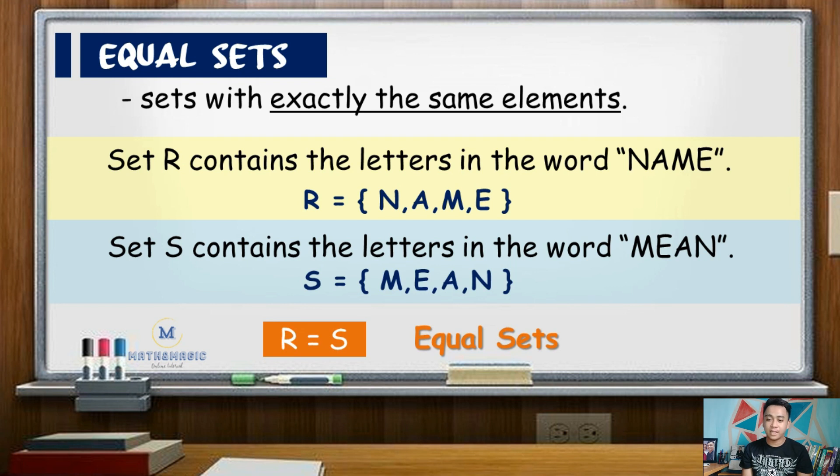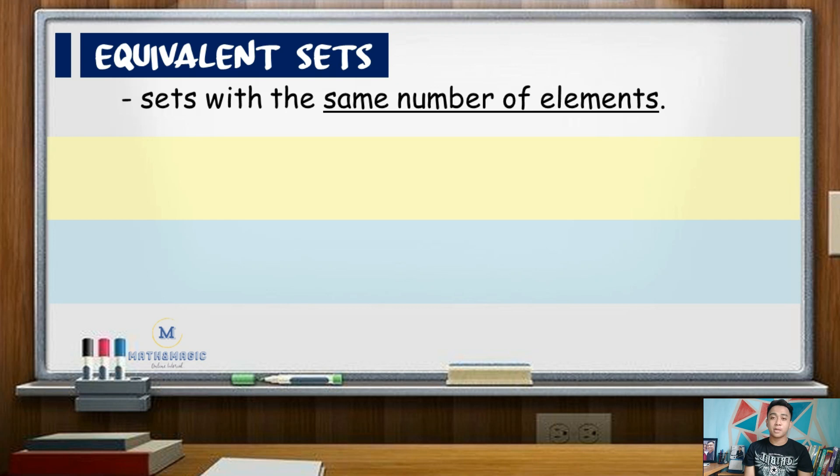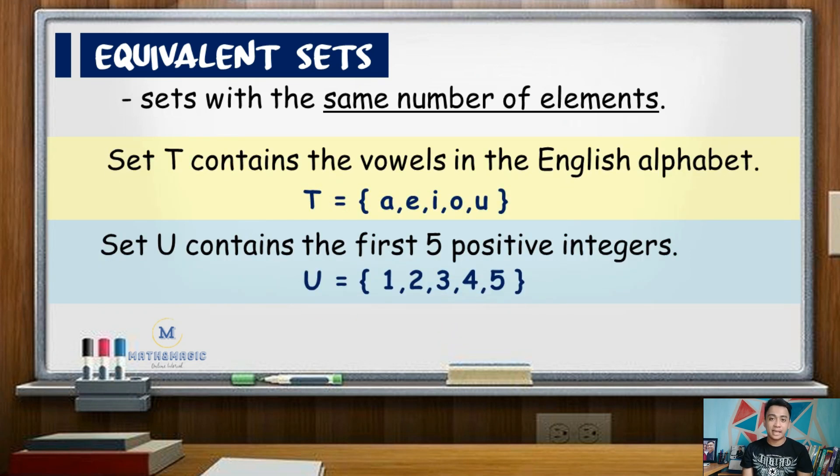On the other hand, two sets are equivalent if they have the same number of elements which are different from the other elements. So in equivalent sets, number of elements are the same but the elements are different. Sets T and U are examples of these sets. Set T contains the vowel letters in the English alphabet, those are A-E-I-O-U, while set U contains the first five positive integers, those are 1, 2, 3, 4, and 5.